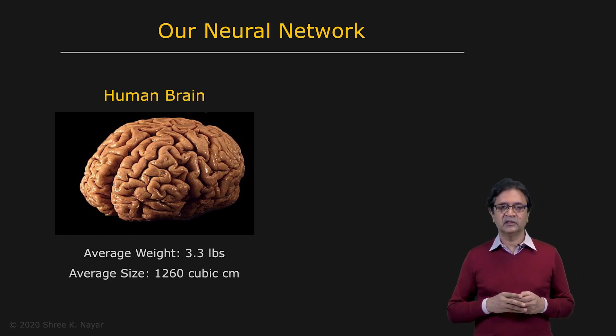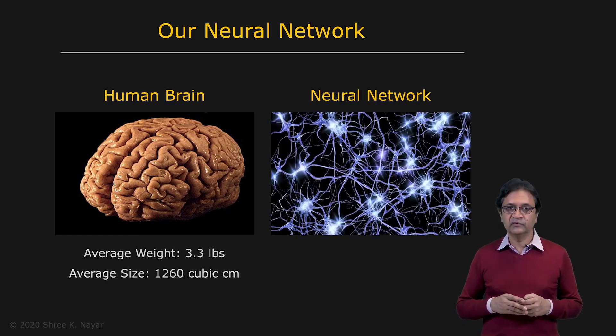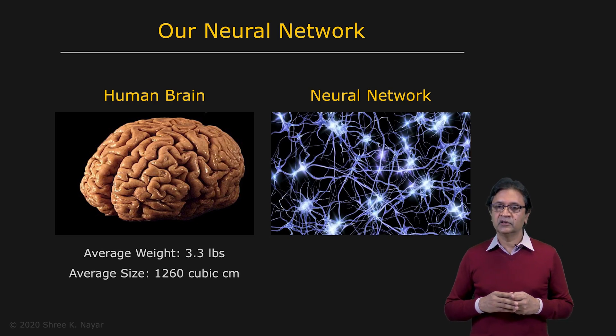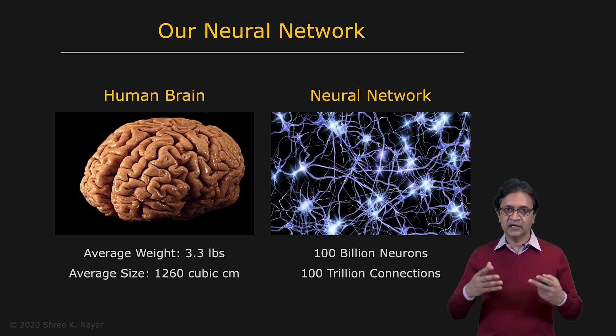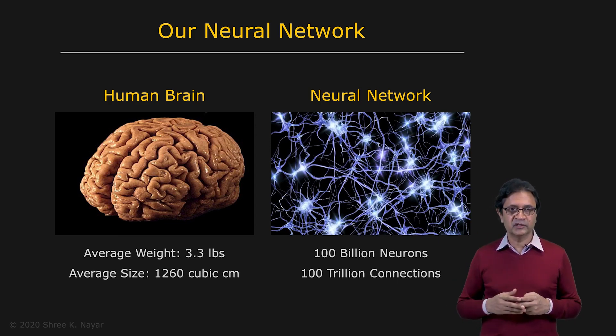And the brain is nothing but a network of neurons. That's what's being shown right here. There are roughly about a hundred billion neurons and these neurons are connected to each other, which accounts for about a hundred trillion connections between these neurons. It is this very complex network that is able to allow us to do all the sophisticated perception tasks that we are able to perform on a daily basis almost seamlessly.